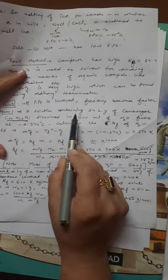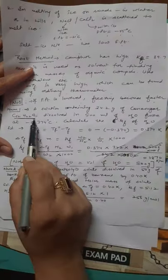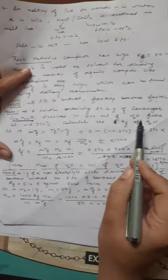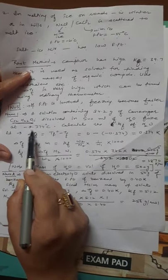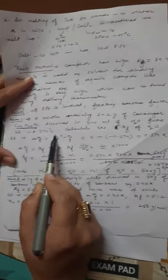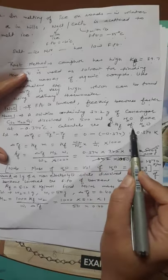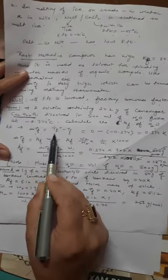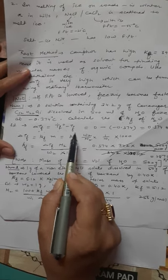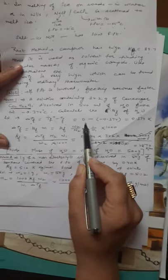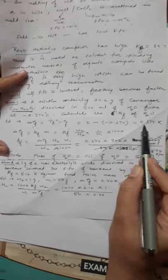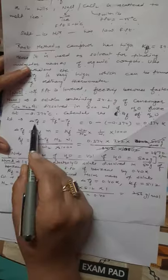A solution containing 34.2 grams of cane sugar, C₁₂H₂₂O₁₁, dissolved in 500 ml of water froze at minus 0.374 degrees Celsius. You have to calculate KF of water. First of all, we will apply the formula ΔTF equals TF° minus TF. TF° is 0 degrees Celsius for water, minus minus becomes plus, so the value will be 0.374 Kelvin for ΔTF.